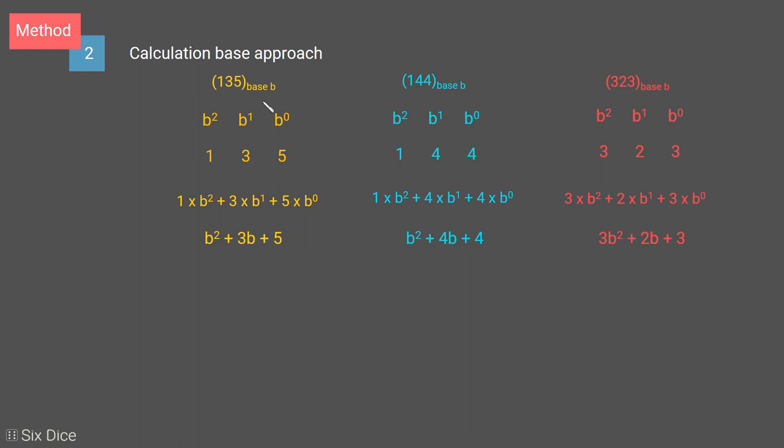To convert base b into decimal, we will first multiply each digit with its positional weight, which is in powers of b. For the first number, our quadratic equation is b squared plus 3b plus 5.